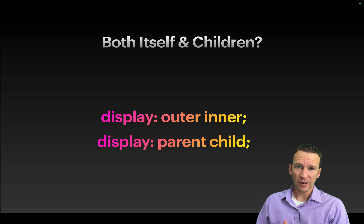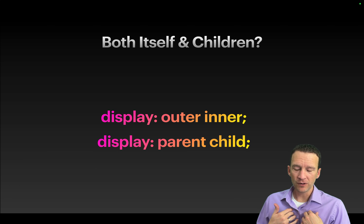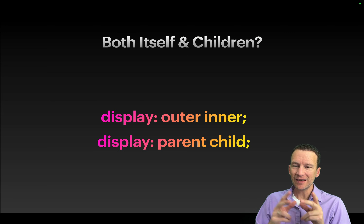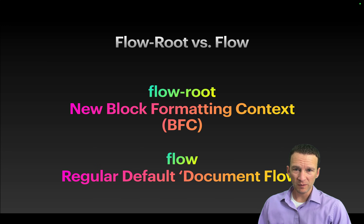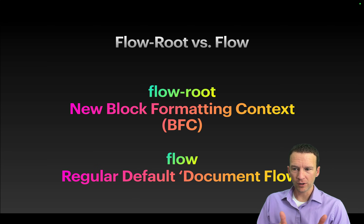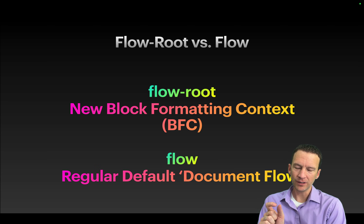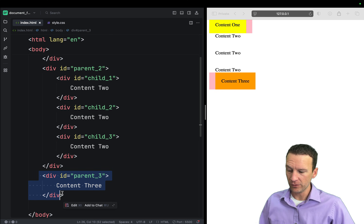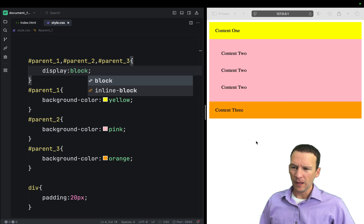The new method is using two separate keywords in the display property — referred to as the outer and inner, or more simply the parent and the children. The first keyword refers to the display of the parent element, and the second keyword refers to the display of the children. Two concepts we need to introduce are flow-root and flow, which come into play because we now have two keywords instead of one.